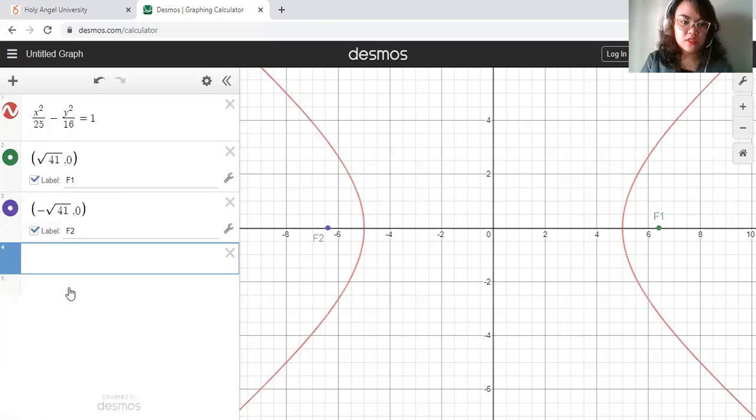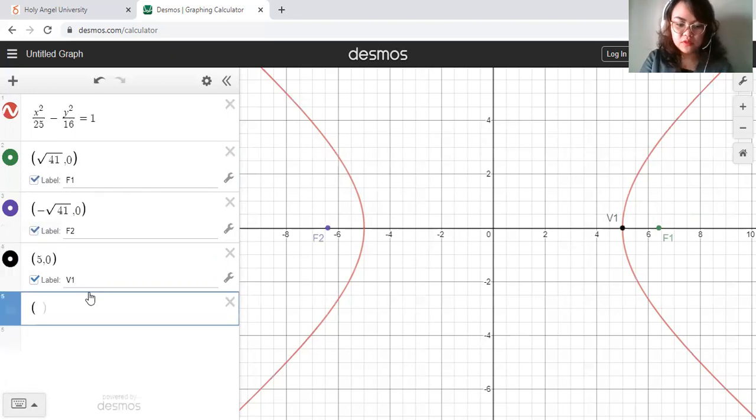Then for the vertices, square root of 25 is 5. So let me plot that, 5, 0, there. And this V1. The other side, negative 5, 0. Check the label, you'll have V2.